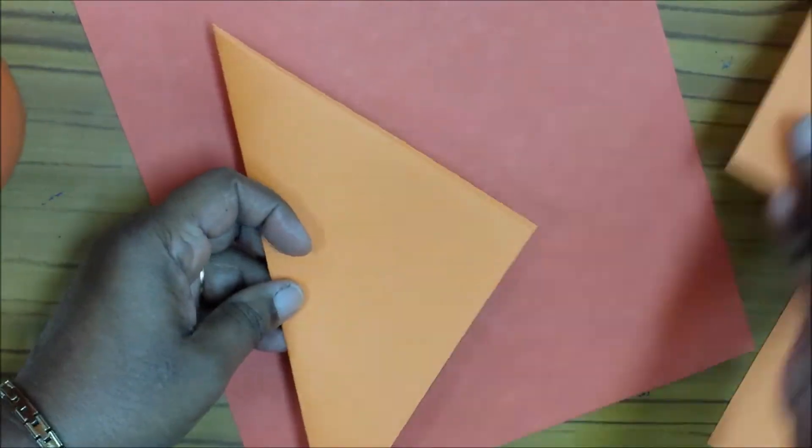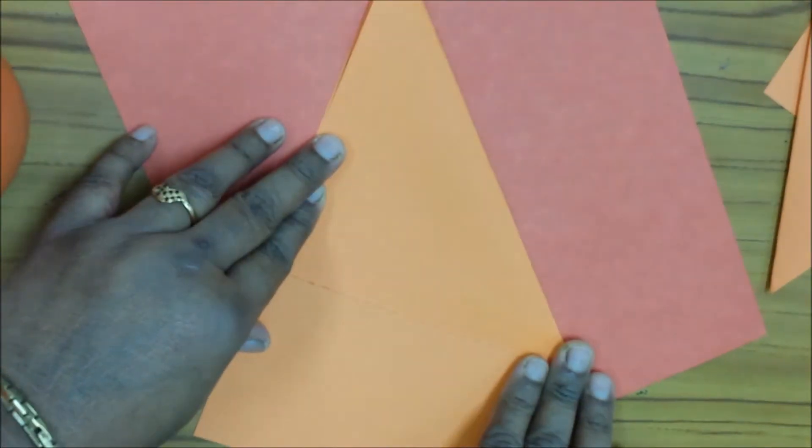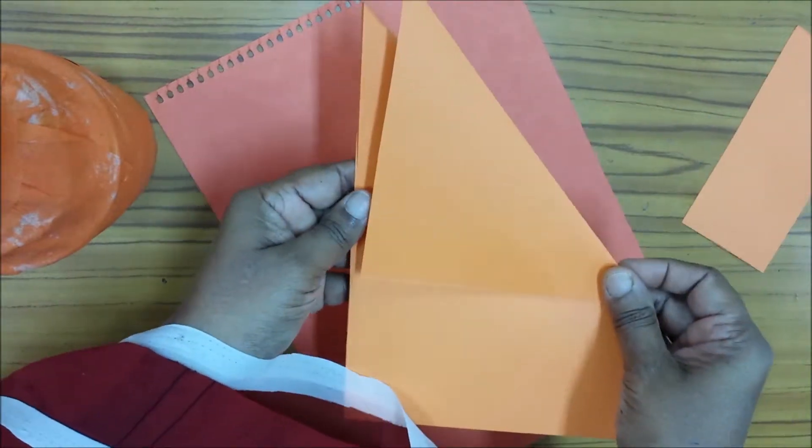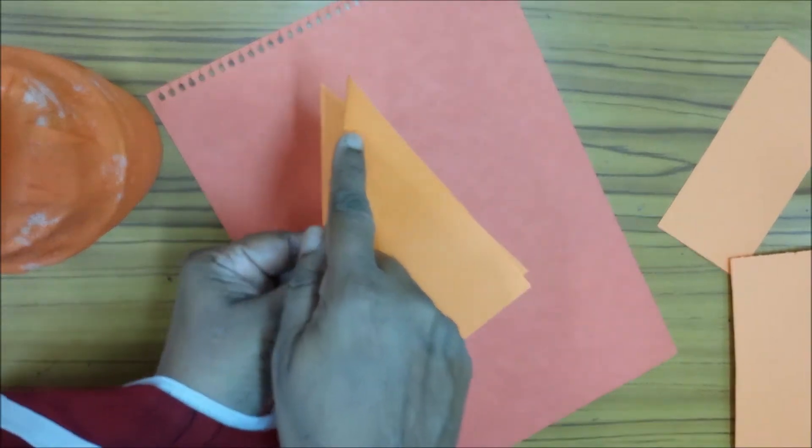one, then little smaller, smaller, smaller, smaller like that. Everything square paper, we have to do square paper. Check the